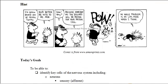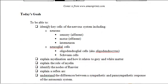And by the end of today's lesson, you should be able to identify the key cells of the nervous system, including neurons. And neurons can be broken down functionally into sensory, motor, and interneurons. That will be the mandatory portion of the video.